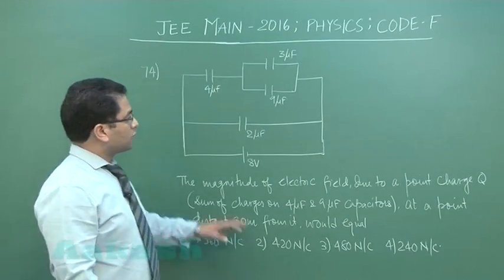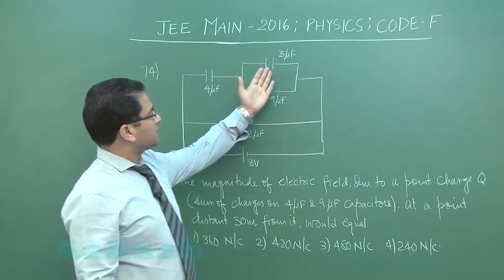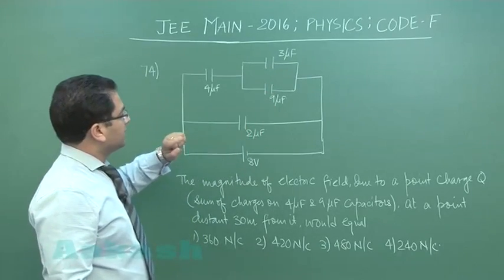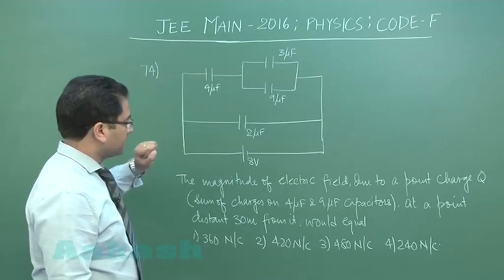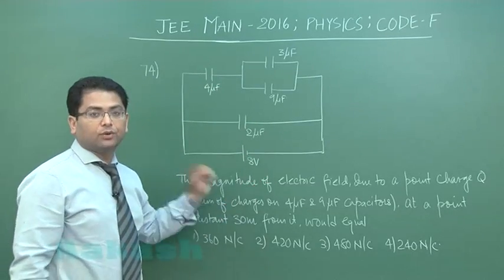Question number 74 is from capacitor. You can see these are two capacitors in parallel, and that is finally in series, and this unit and this unit are in parallel connected across an 8 volt supply.